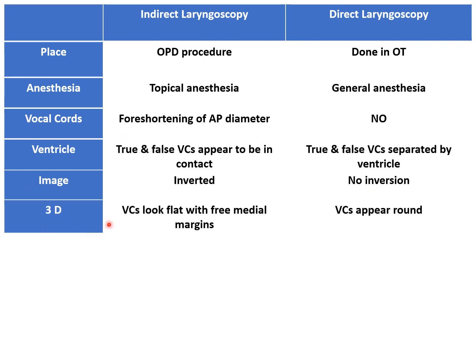Regarding depth perception, depth is not perceived in indirect laryngeal examination. So the vocal cords look flat — only two dimensions are seen, with a free medial margin. While in direct laryngeal examination, the vocal cords are seen as 3D structures — that is, they appear round in shape.